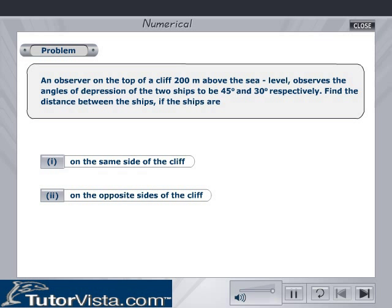An observer on the top of a cliff, 200 meters above sea level, observes the angles of depression of two ships to be 45 degrees and 30 degrees respectively. Find the distance between the ships if the ships are: (1) on the same side of the cliff, (2) on the opposite sides of the cliff.